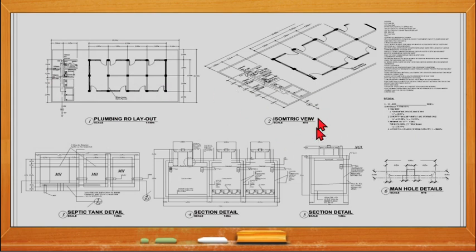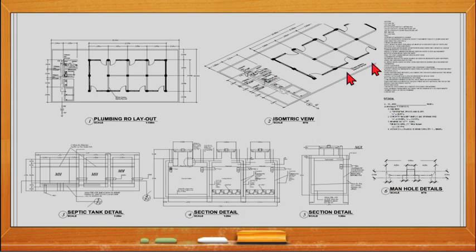The last one is the plumbing and sanitary plans. This is the plumbing layout showing the isometric view with the elevation of the plumbing pipes. These are the septic tank details — the section details and the manhole details. We also have the symbols used for the piping and the symbols for the septic tank details, and the computation for the size of the pipes and the size of the septic tank.